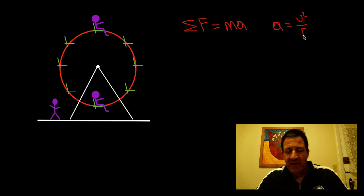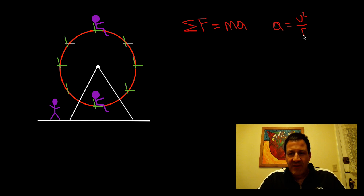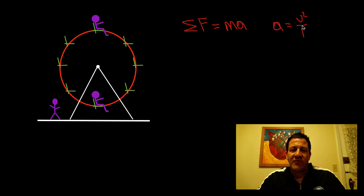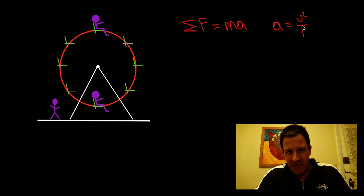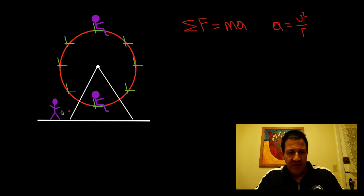Oftentimes in a problem, it'll say you have a Ferris wheel going around in a circle with this velocity and this radius — what's the normal force? In this case, to keep the calculation simple, I'm just going to leave a as a. I'm not going to substitute in v squared over r, but when you do the calculations in a second video, we'll use that equation to find the actual acceleration.